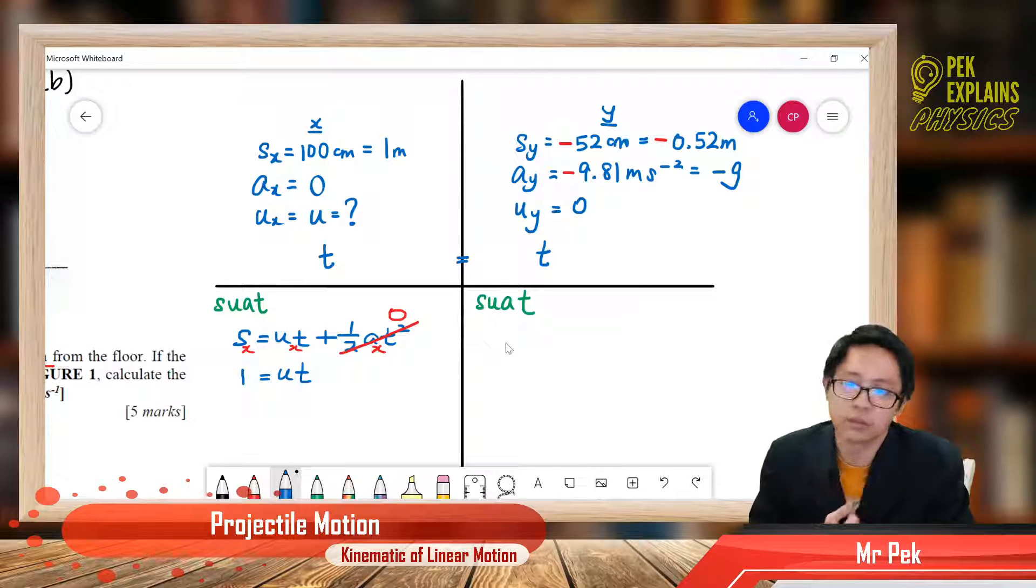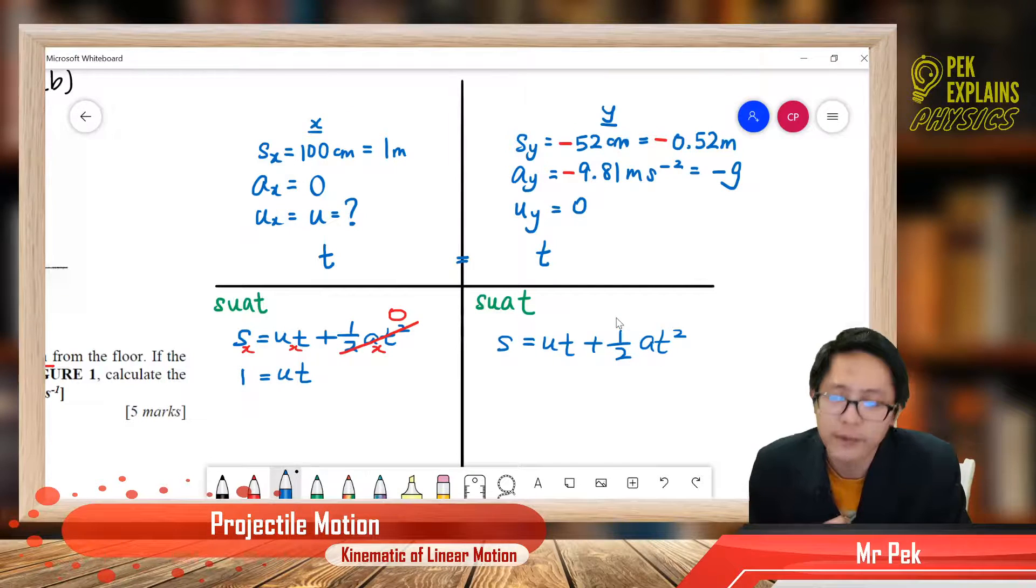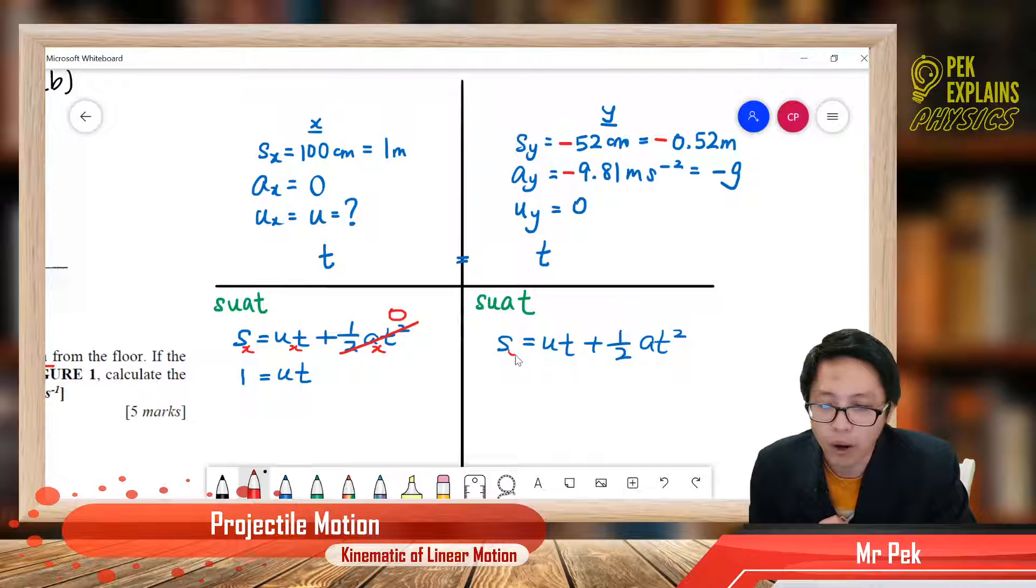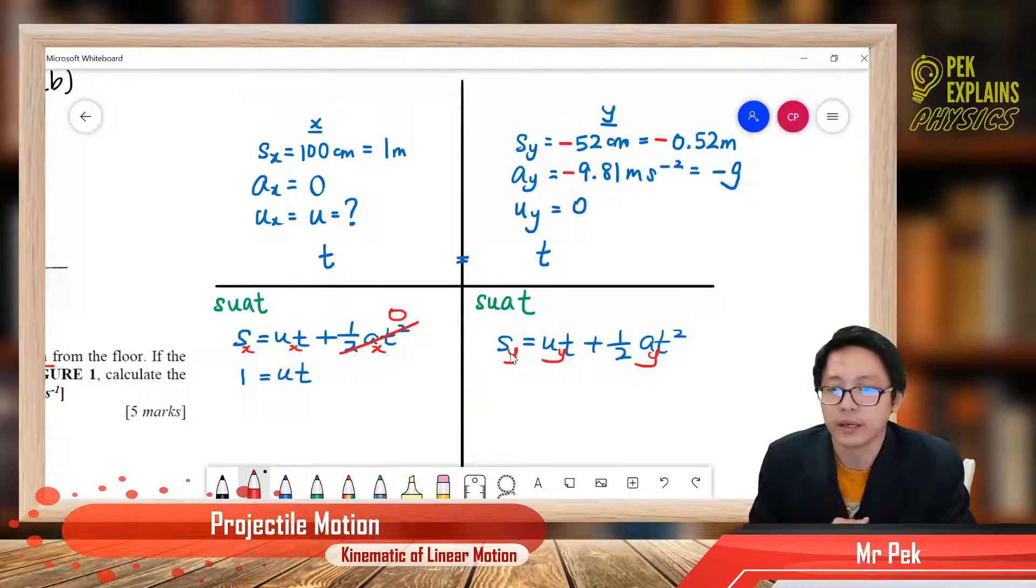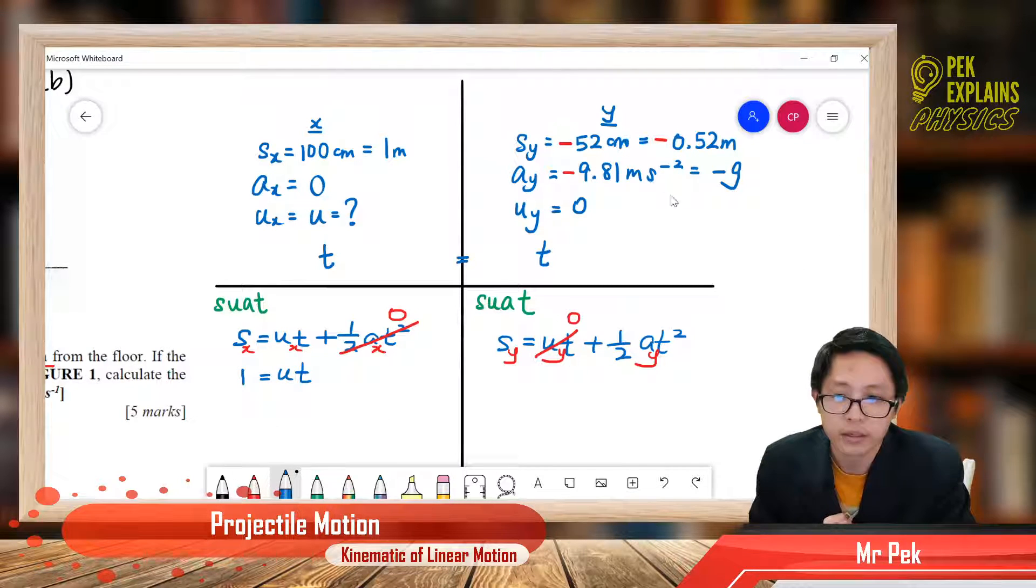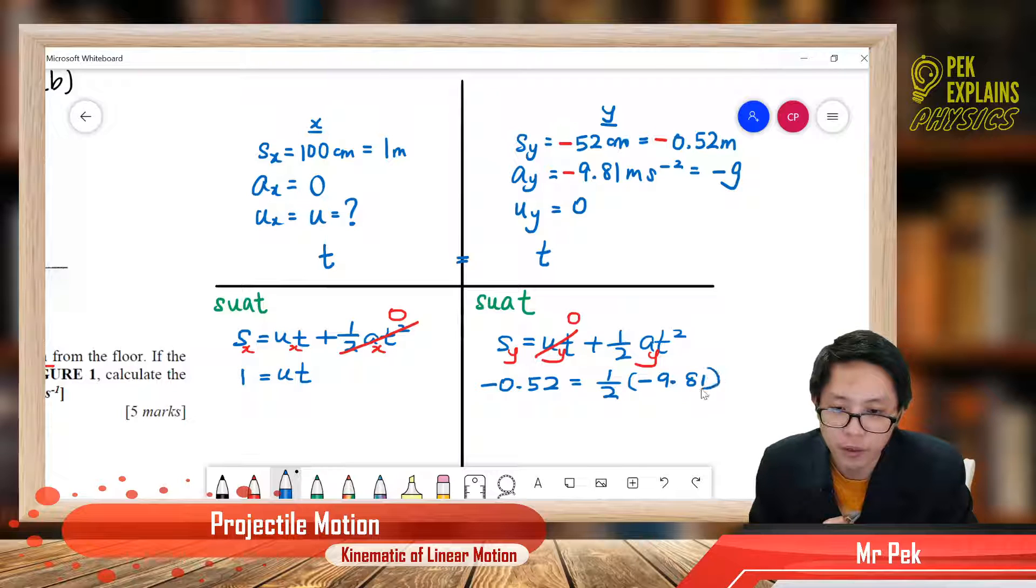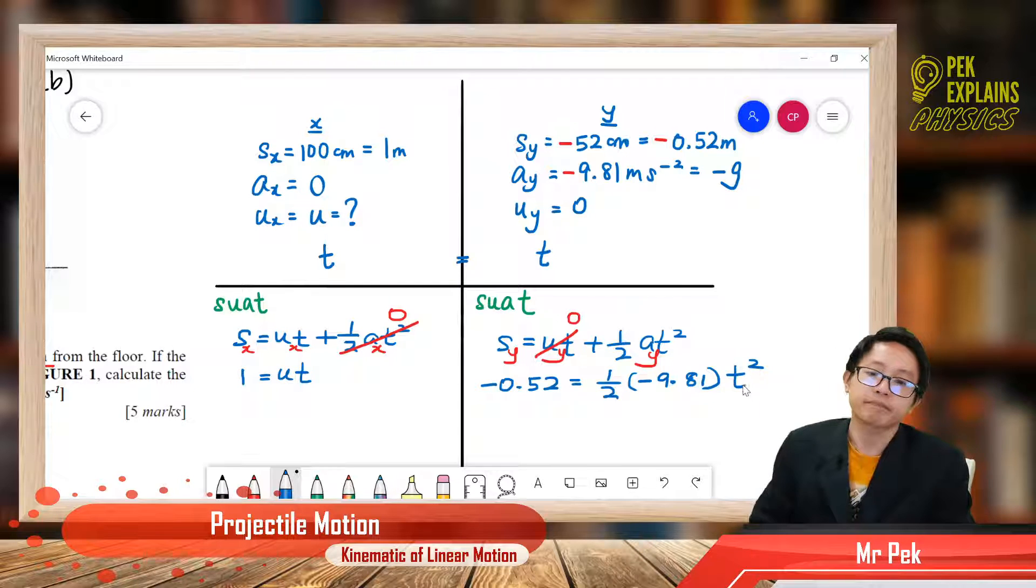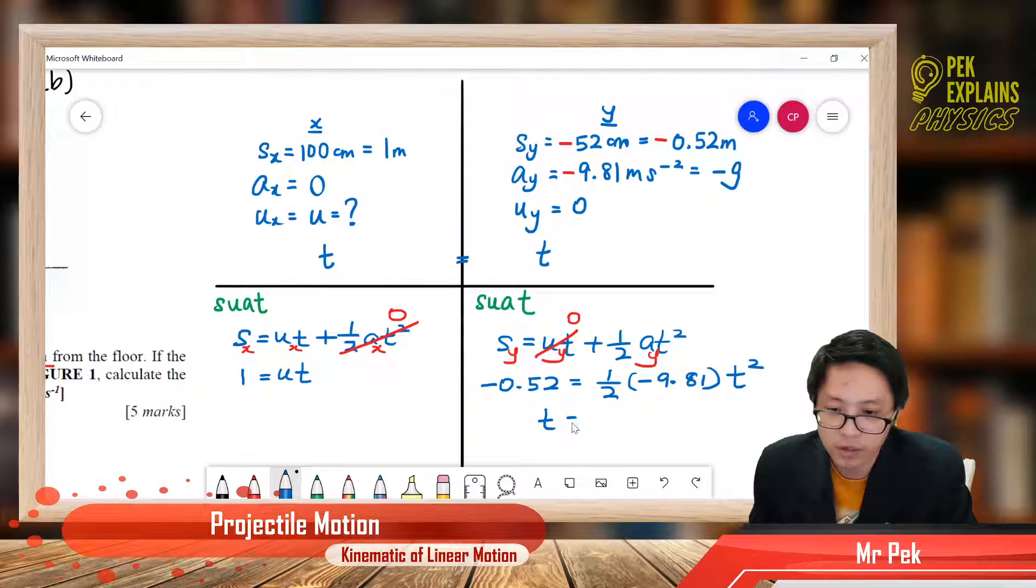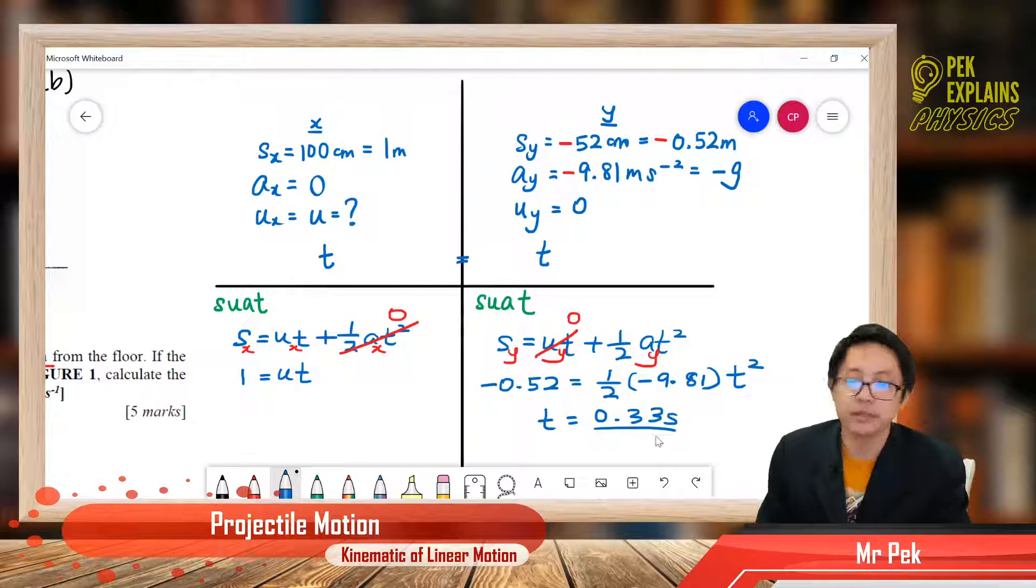Y component also SUAT, so we can also use the same formula, S equal to ut plus half a t square. But this one, all are y component. Uy is 0, so we can cut this off, become 0. Then substitute all the other information we have. Sy is negative 0.52, equal to half times ay, which is negative 9.81, times t square. So from here, the calculation gives us time equal to 0.33 second.